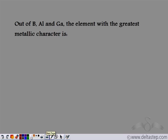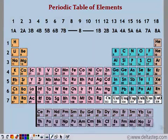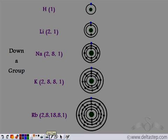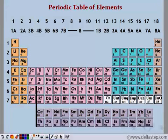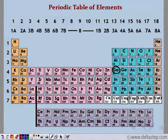Consider three elements — boron, aluminium, and gallium — and determine which has the greatest metallic character. Looking at where they lie in the periodic table, these three elements are in the same group. We have just studied that on moving from top to bottom in a group, the metallic character increases. So gallium, being at the bottom of the three, has the greatest metallic character out of boron, aluminium, and gallium.